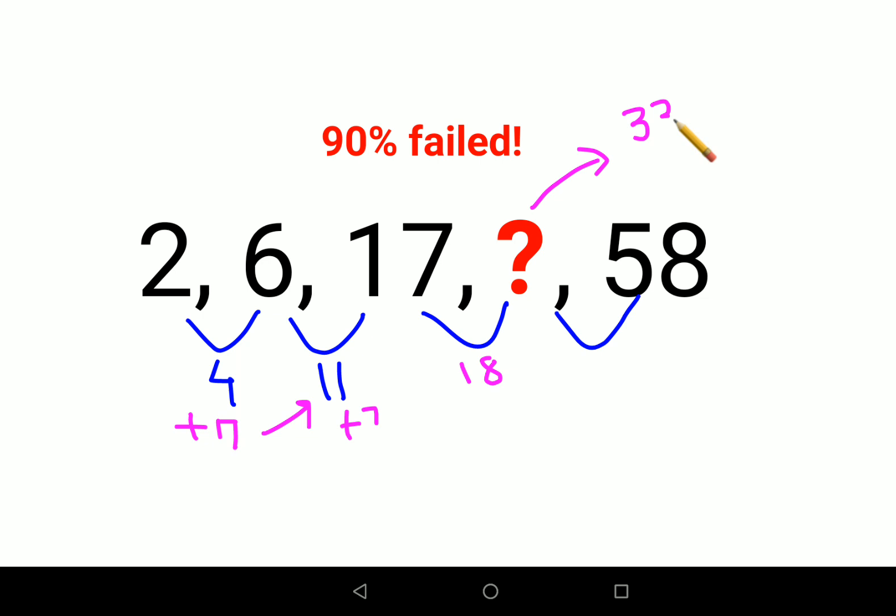So again here we'll add 7, so 18 plus 7 gets you how much? 18 plus 7 gets you 25, and if I add 25 to 33, I get the answer as 58.